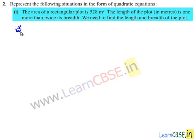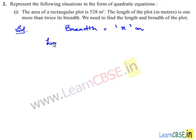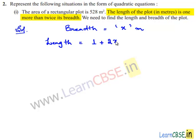Coming to the solution, let us assume that the breadth of the rectangular plot is equal to x meters. The length is equal to one more than twice its breadth, that is 1 plus 2 times of the breadth. We know that breadth is x, so twice the breadth is 2x. Therefore, the length becomes 1 plus 2x.